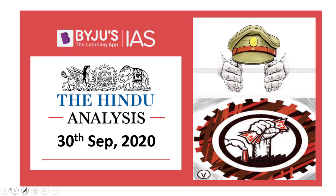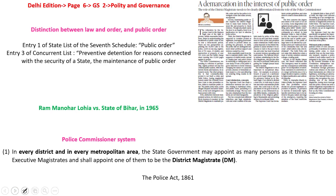Hello and welcome to ByJews IAS. Let's get started and look into the first article. The first article speaks about demarcation in the interest of public order. This article discusses two important issues: first, it helps us understand the difference between law and order and public order.